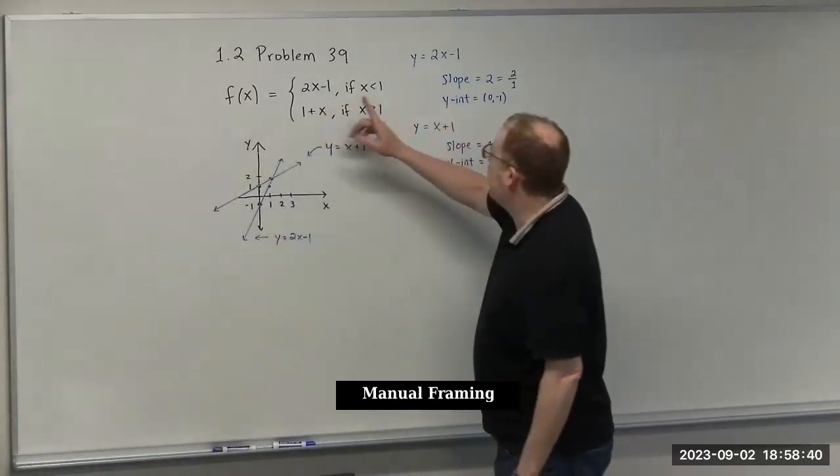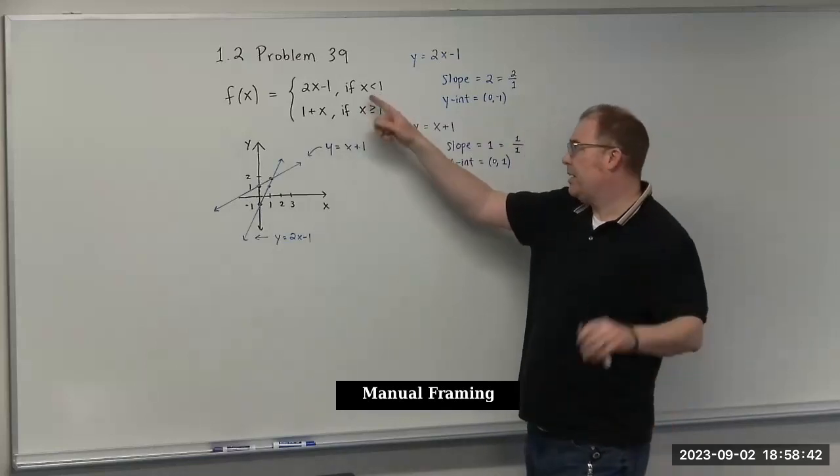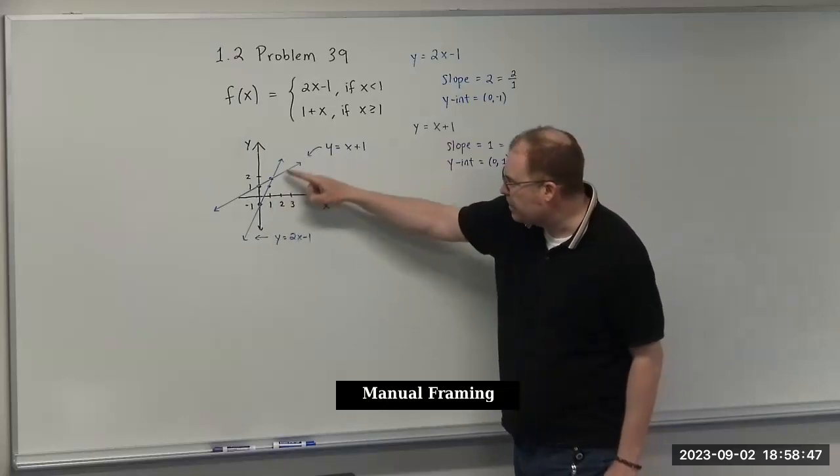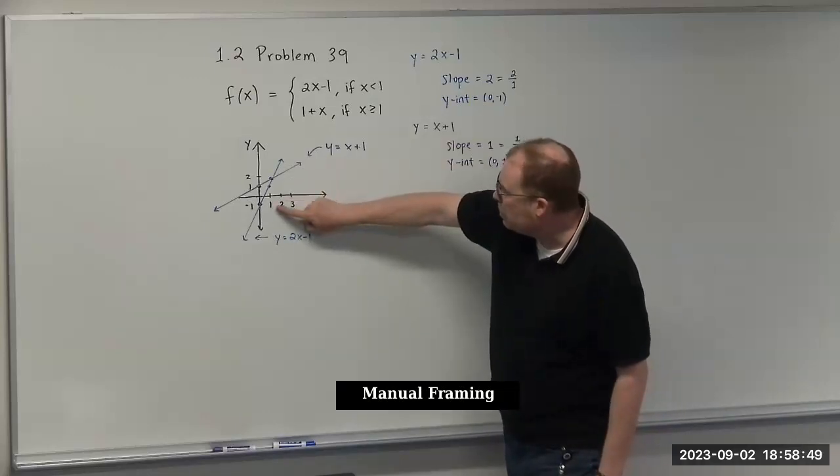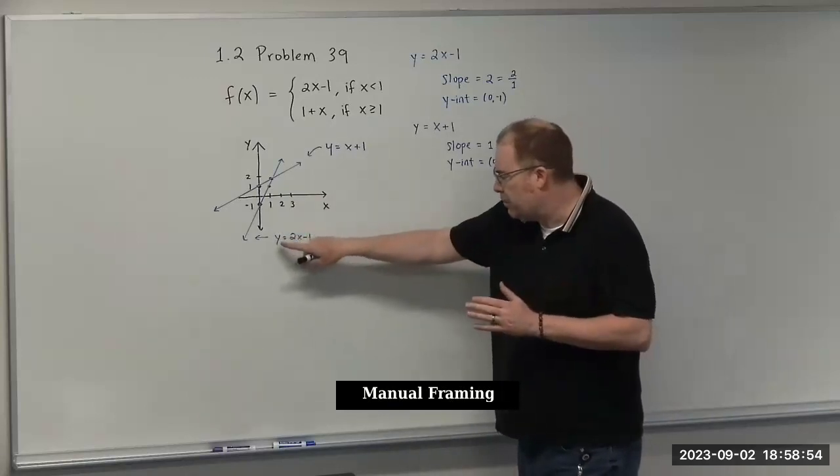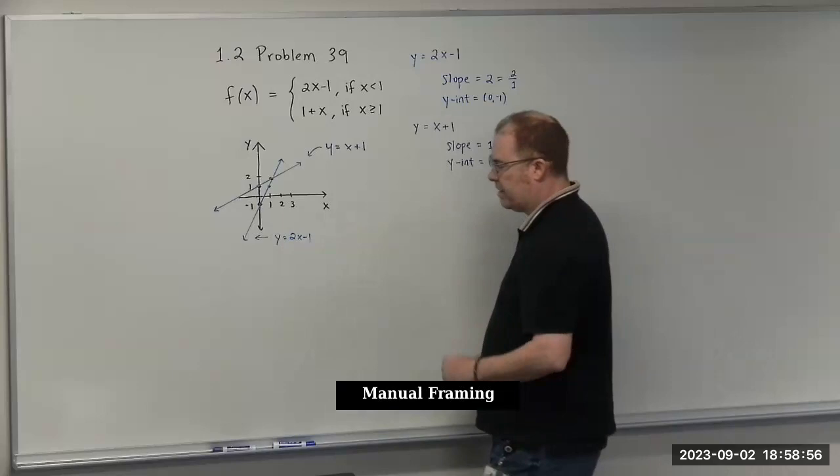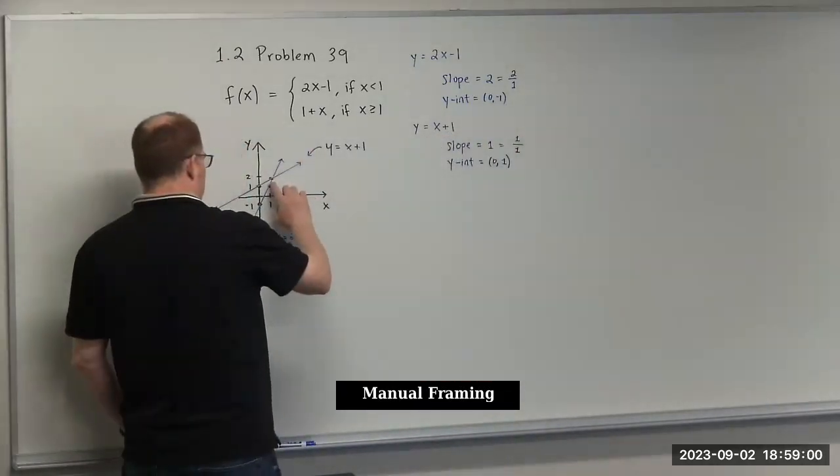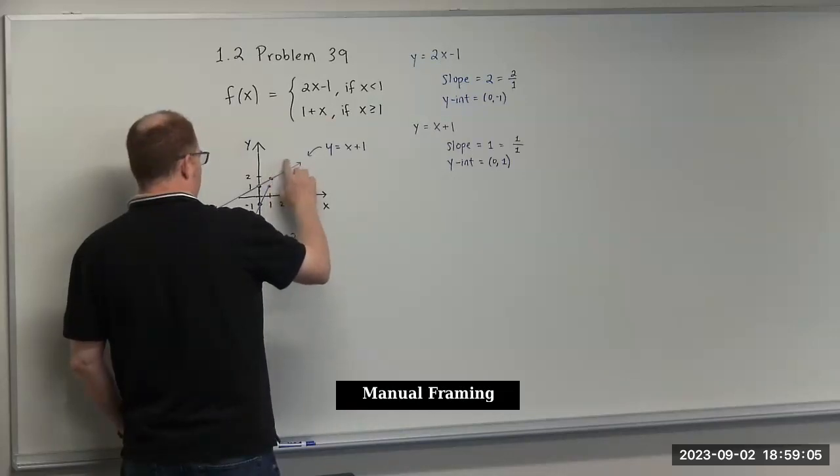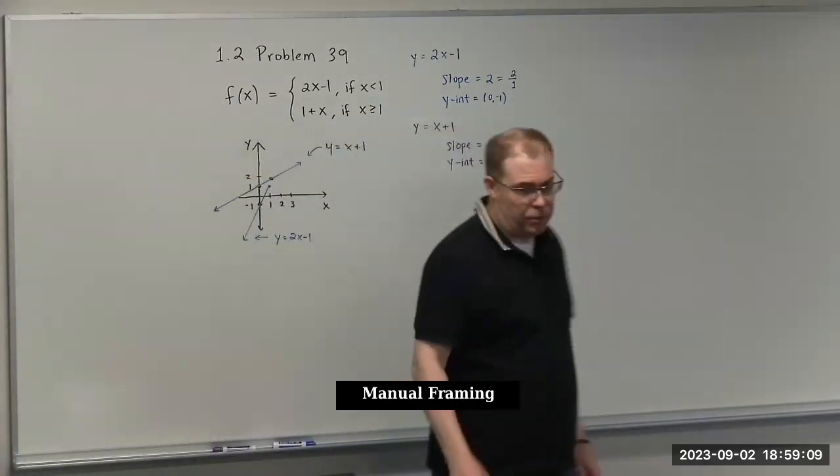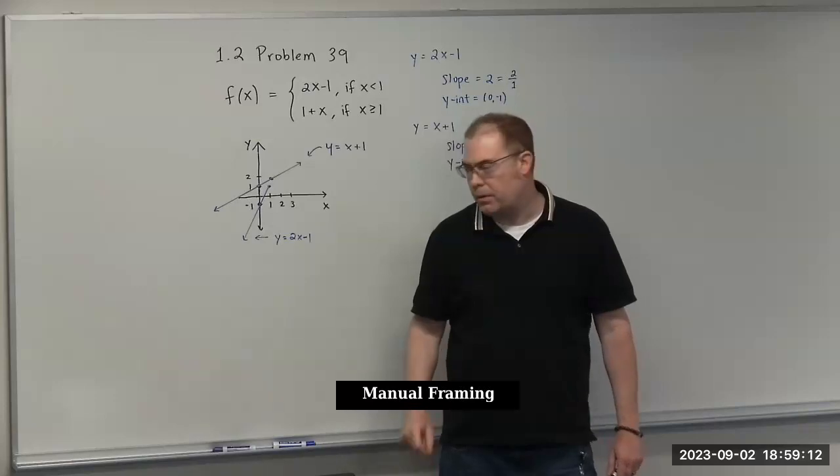This is saying that when x is strictly less than 1, it's going to take on this form, 2x minus 1. So here's our graph of 2x minus 1. Here's x equals 1. We can go ahead and erase everything after x equals 1. I'm just going to erase that part. That's why it's good to use a pencil when you're doing your work.